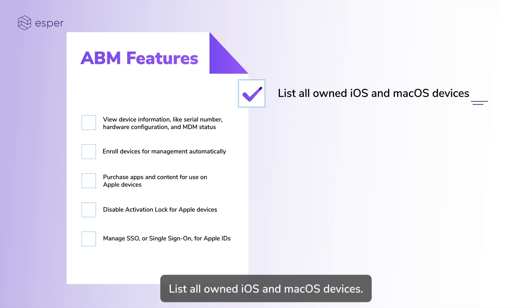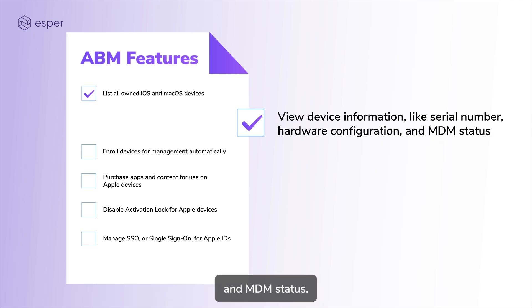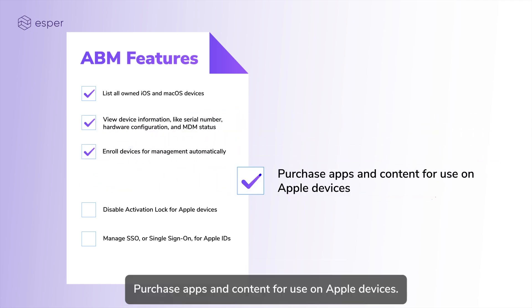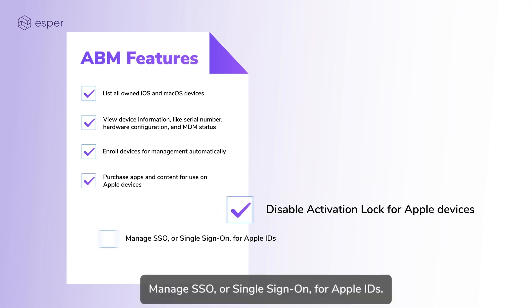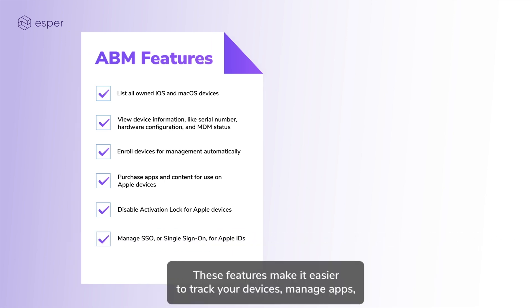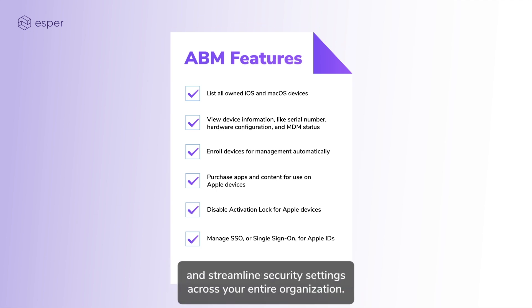List all owned iOS and macOS devices. View device information like serial number, hardware configuration, and MDM status. Enroll devices for management automatically. Purchase apps and content for use on Apple devices. Disable activation lock for Apple devices. Manage SSO, or single sign-on, for Apple IDs. These features make it easier to track your devices, manage apps, and streamline security settings across your entire organization.